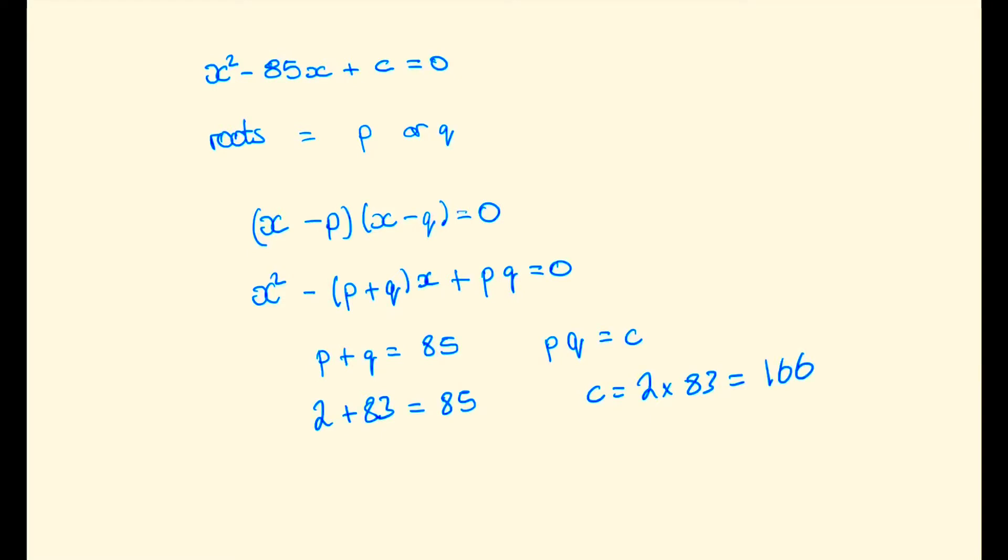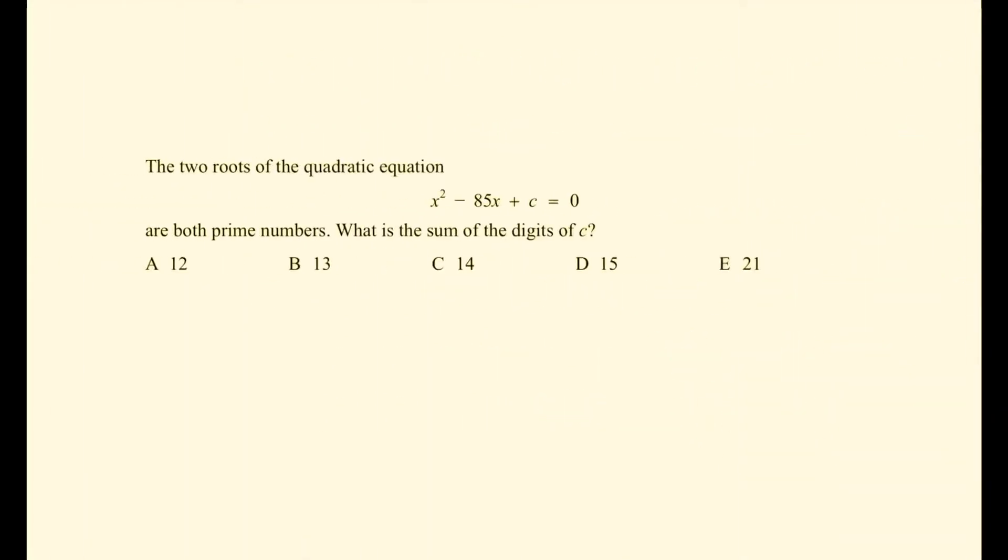And so the sum of the digits of c, 1 plus 6 plus 6 is 13. And so the answer to this problem is b, 13.